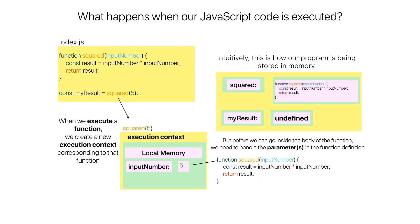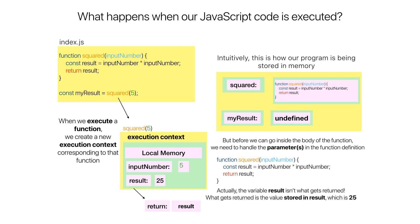Now that we've handled all of the arguments, we can enter the body of the function and start running its code. In the first line we create a new variable called result and store input_number times input_number. Since input_number is five, this is five times five, giving us 25. We then hit the return keyword, indicating we are ready to leave the function and return a value. What actually gets returned is not the variable result, but the value stored in result, which is 25.